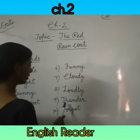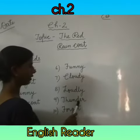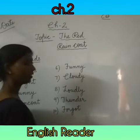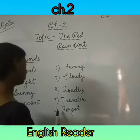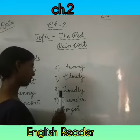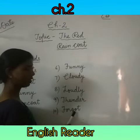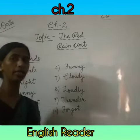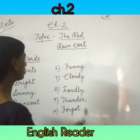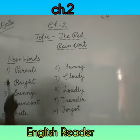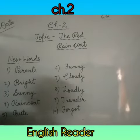Ninth is thunder. T-H-U-N-D-E-R. Thunder. And tenth is forgot. F-O-R-G-O-T. Forgot. These are the new words of chapter 2.